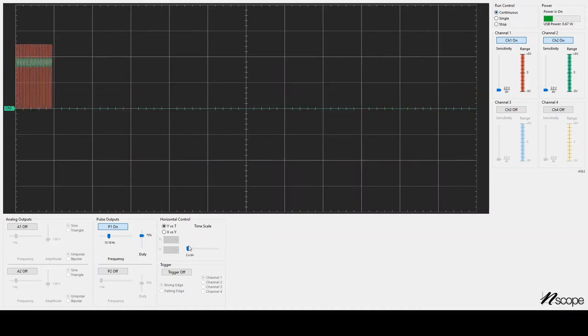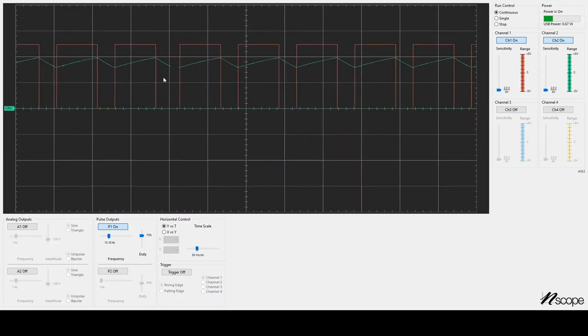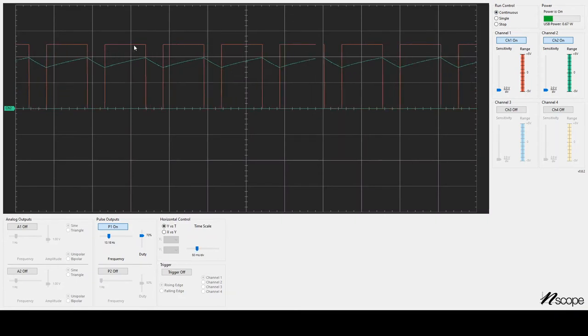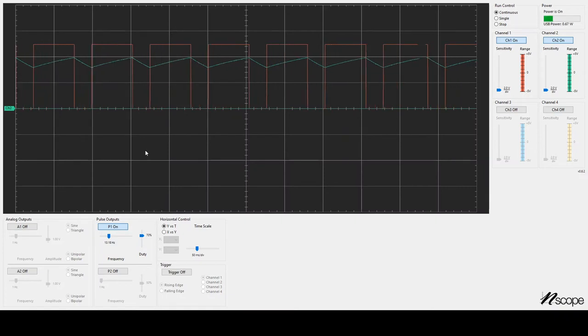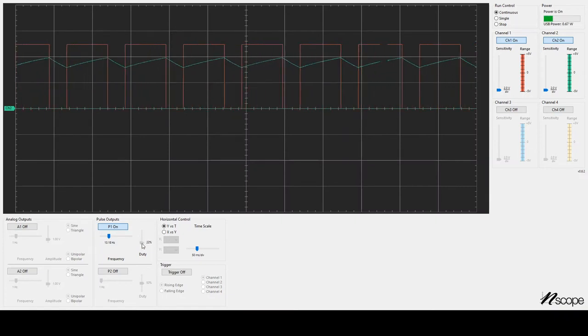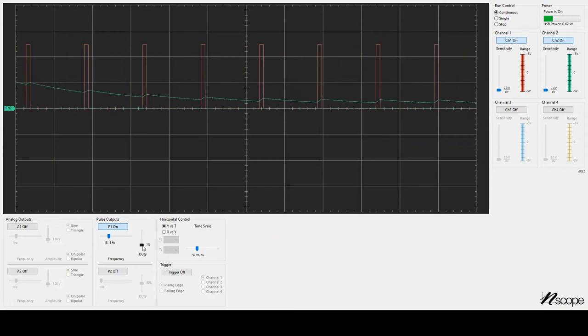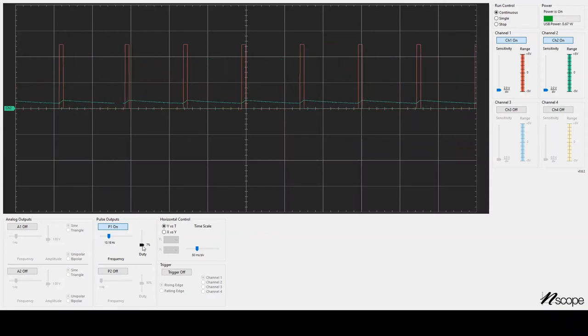Let's see what that looks like if we zoom in. So here's a high duty cycle. The red line is mostly high. We see the average of the green line is high. If I decrease the duty cycle, now the average is low.